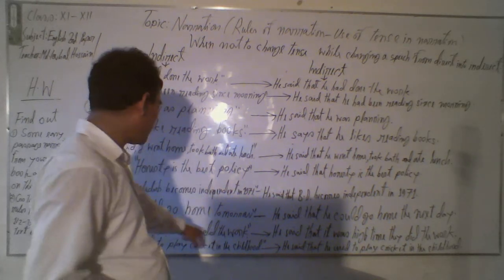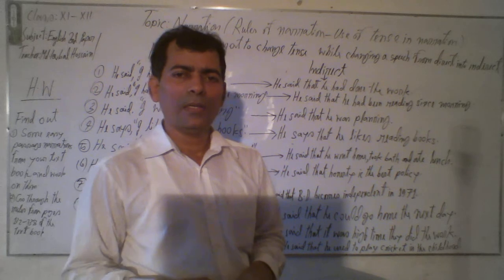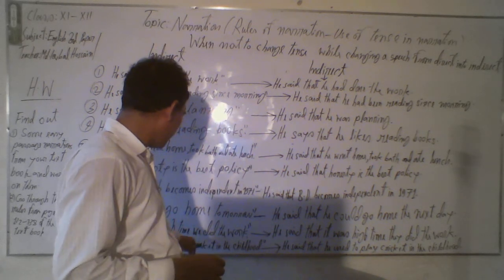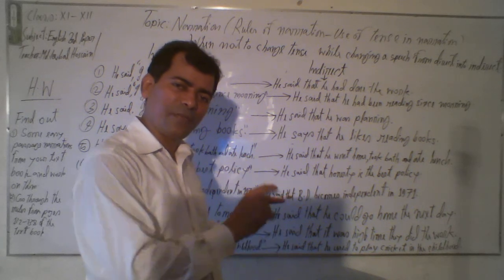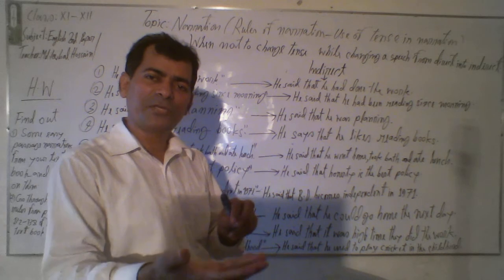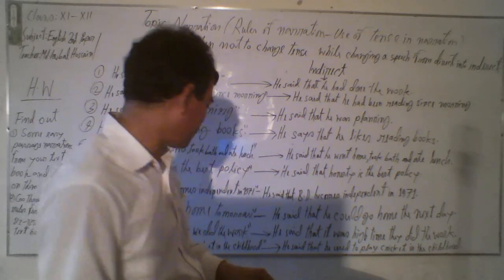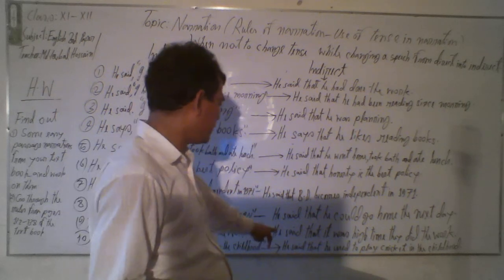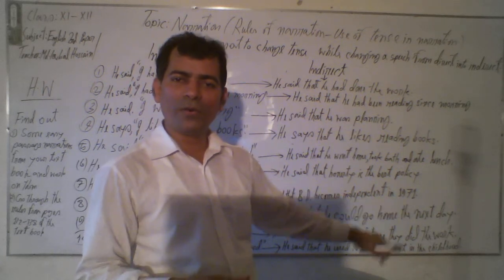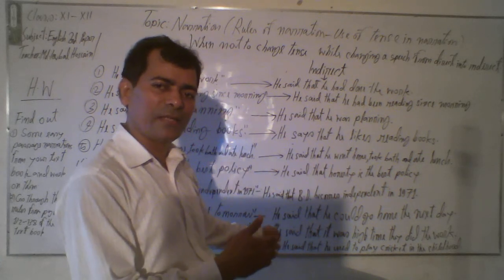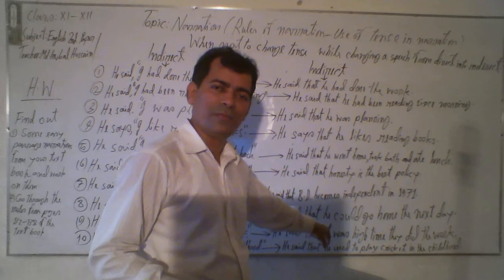Exception nine: 'He said, it is time we did the work.' In structures with 'it is time' or 'it is high time,' we use subject + verb + object. Here there are two verbs: 'is' in the first part and 'did' in the second part. In indirect narration, the first part 'is' can change to 'was,' but the second part — 'we did the work' — does not change. So: 'He said that it was time they did the work.' Do not change 'did' to 'had done.' Remember, the verb in the second part of 'it is time' sentences remains unchanged.